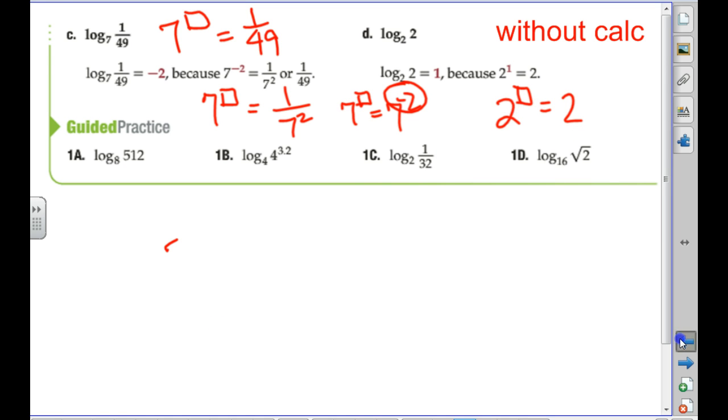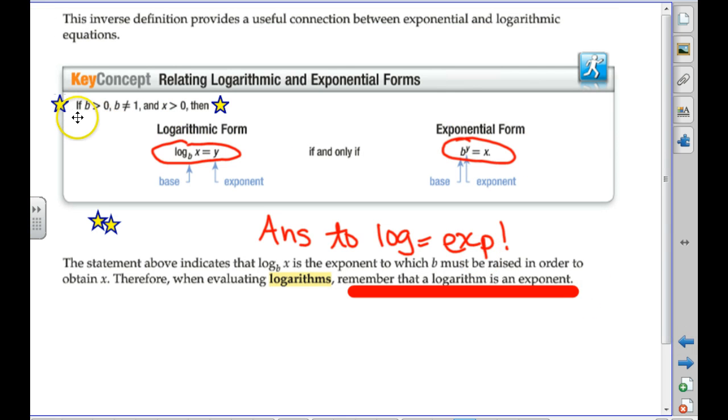I'm going to jump back real quick. I kind of forgot to talk about these things up here. By definition, B, the base, cannot be negative or 1. And the value you're taking a log of also has to be positive. So, B has to be positive, but it can't be 1, but it can be like 1/4, 1/3. And X, the value you're taking the log of, has to be positive by definition.